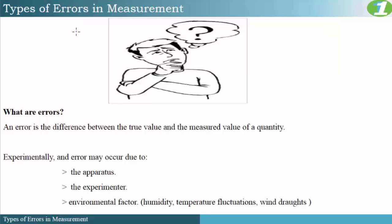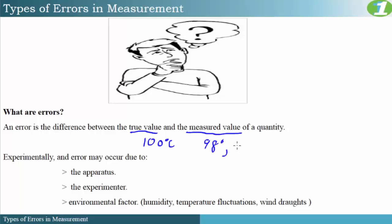What are errors? An error is the difference between the true value of a quantity and the measured value of a quantity. The true value is the exact value of that particular quantity. For example, the true value of the boiling point for pure water is 100 degrees Celsius. However, during an experiment the measured value might fluctuate — you could possibly get 98 degrees Celsius, 97 degrees Celsius, or a variety of different measurements.